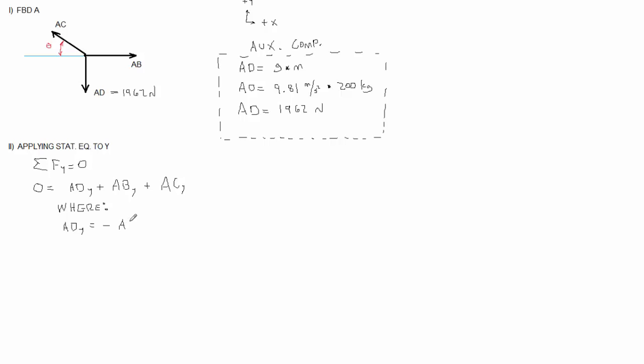AB has no y component, therefore it's zero. And AC's y component equals a positive sine theta times AC.